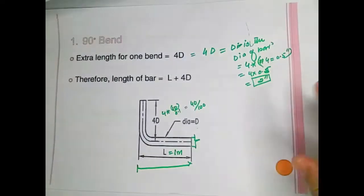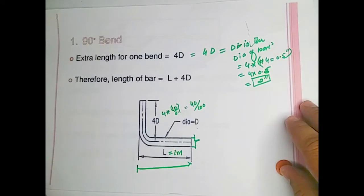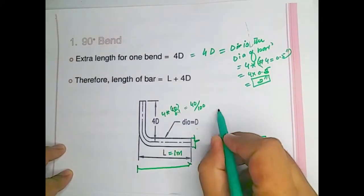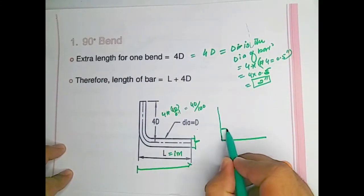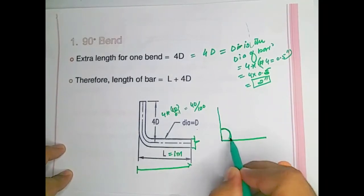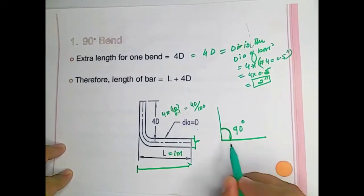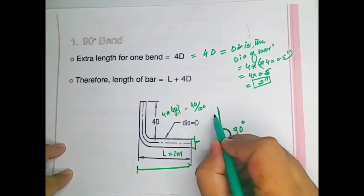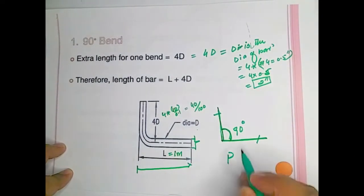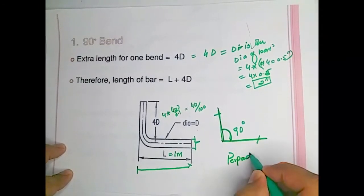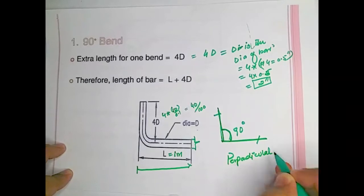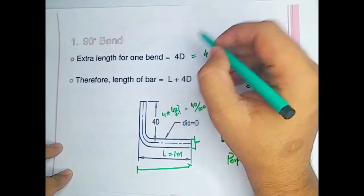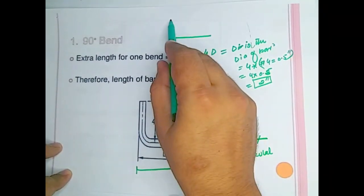Let's start with the 90 degree bend. The 90 degree bend is the type of bend which makes 90 degrees with its perpendicular, which means that both sides of the steel — this one and this one — will be perpendicular to each other.